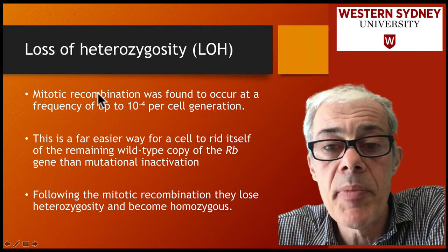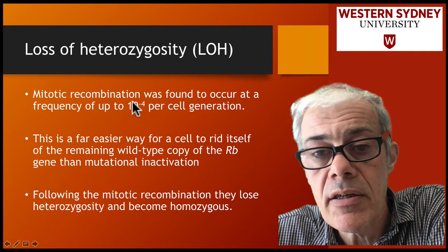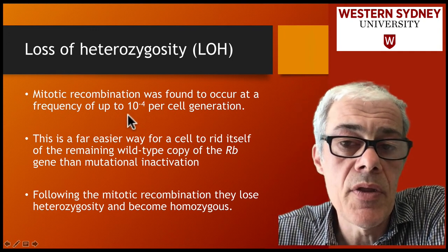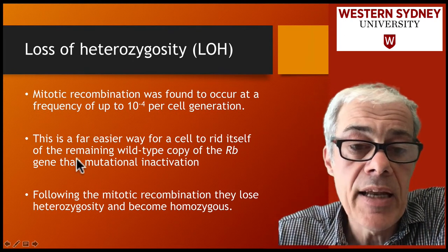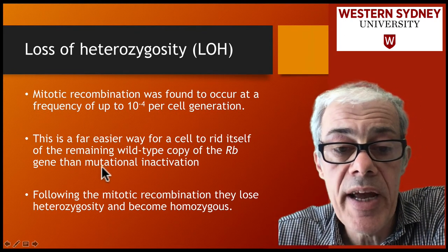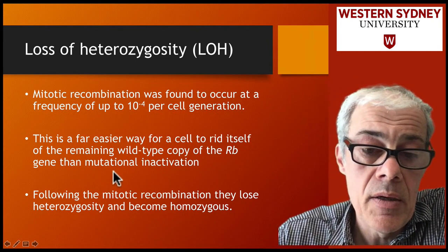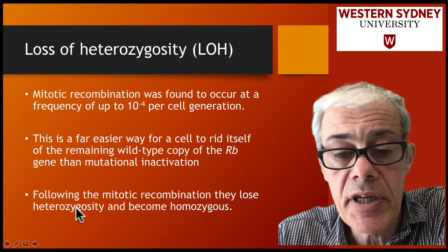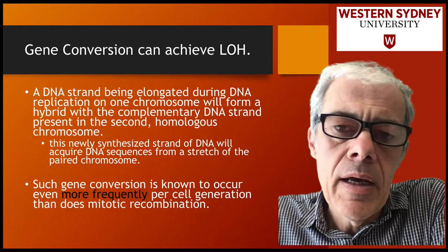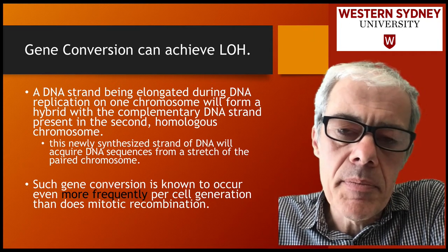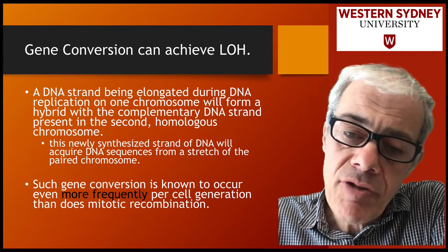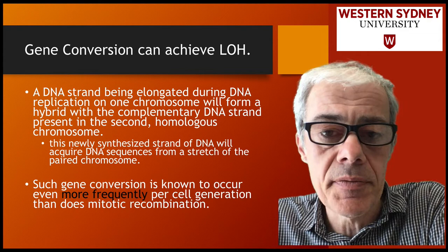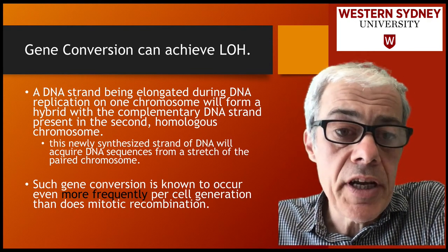Mitotic recombination occurs at a higher rate than mutations through normal processes, and it's a far easier way for the cell to lose the remaining good copy. Following mitotic recombination, the cells lose their heterozygosity to become homozygous. It turns out there's another mechanism to lose heterozygosity that occurs at an even higher frequency than mitotic recombination, and that's called gene conversion.